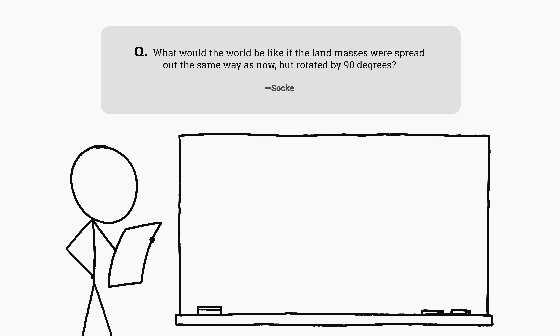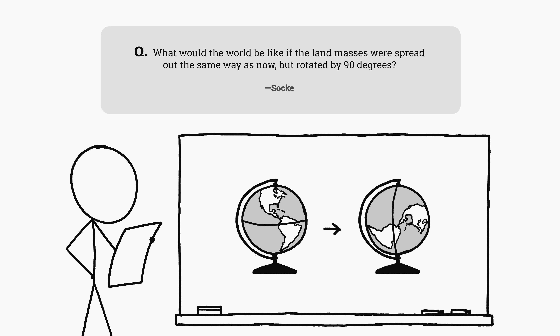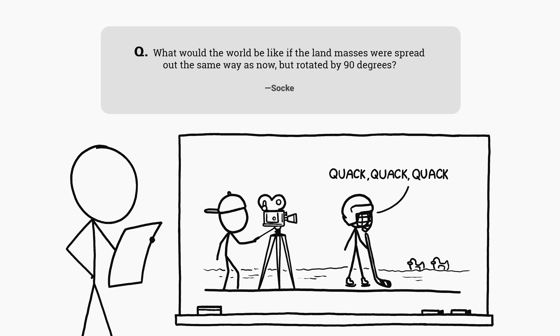This question comes from Sok, who asks: what would the world be like if the landmasses were spread out the same way as now, but rotated by 90 degrees? It would profoundly alter our world in general, and the weirdly Minnesota-heavy world of 1990s cinema in particular.